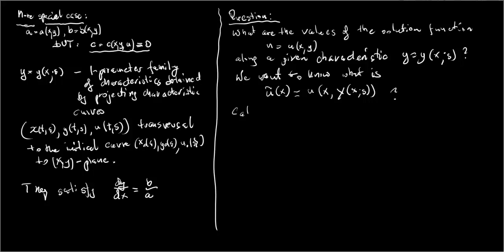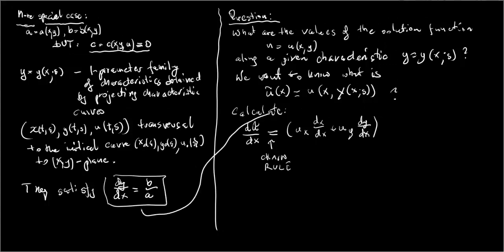We calculate what is the rate of change of U twiddle with respect to X by taking its X derivative. We use the chain rule. So dU twiddle over dX is U sub X times dX over dX plus U sub Y times dY over dX. We now use ODE satisfied by the characteristics and we replace dY over dX by B over A.